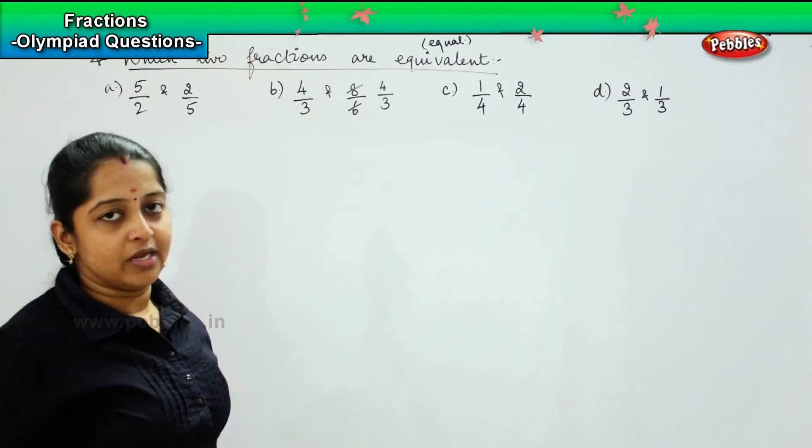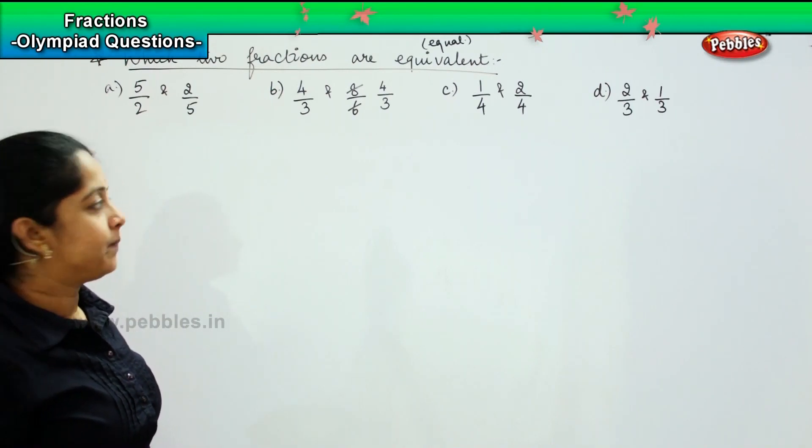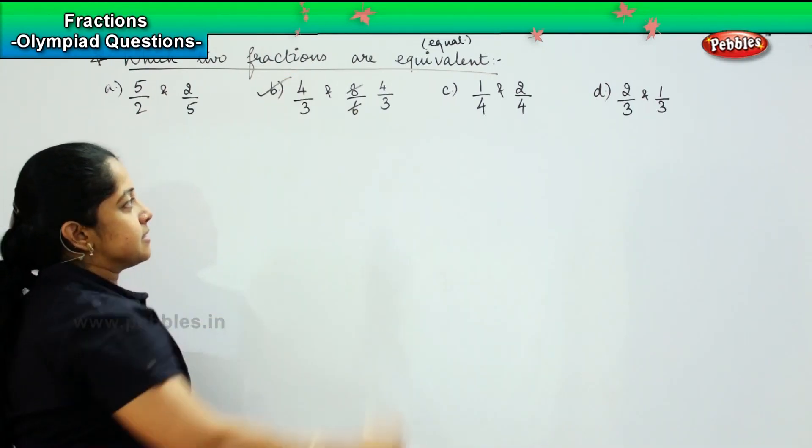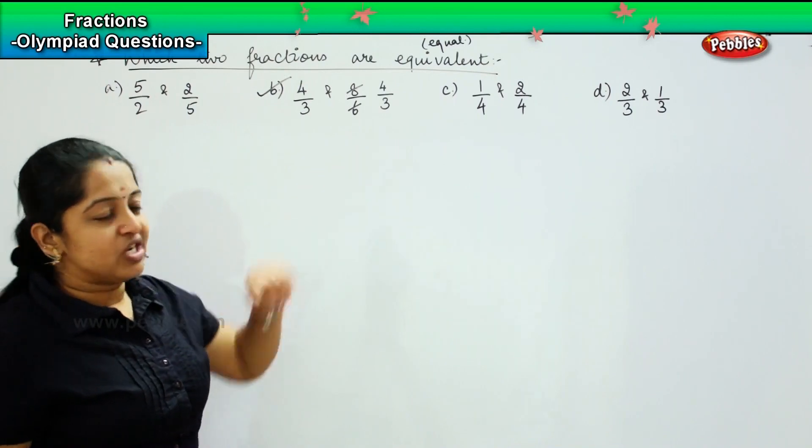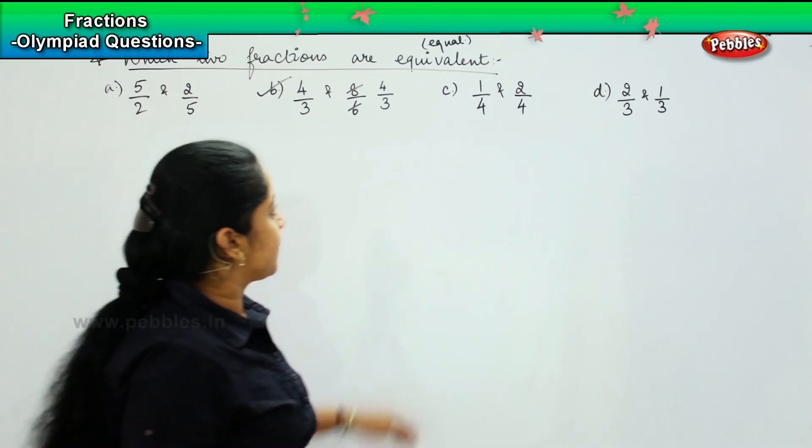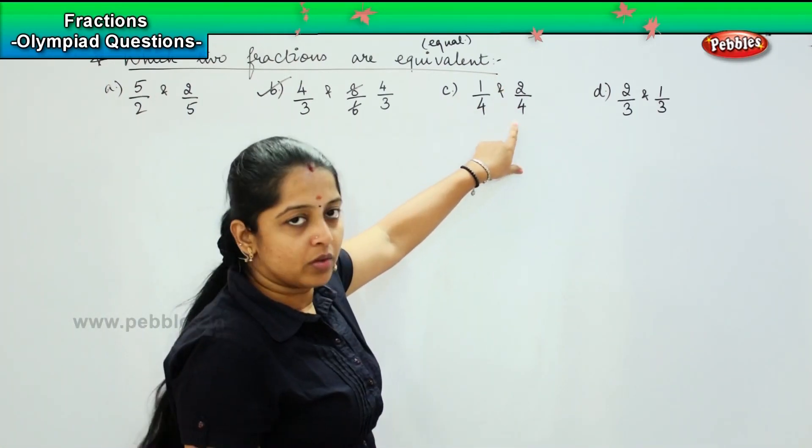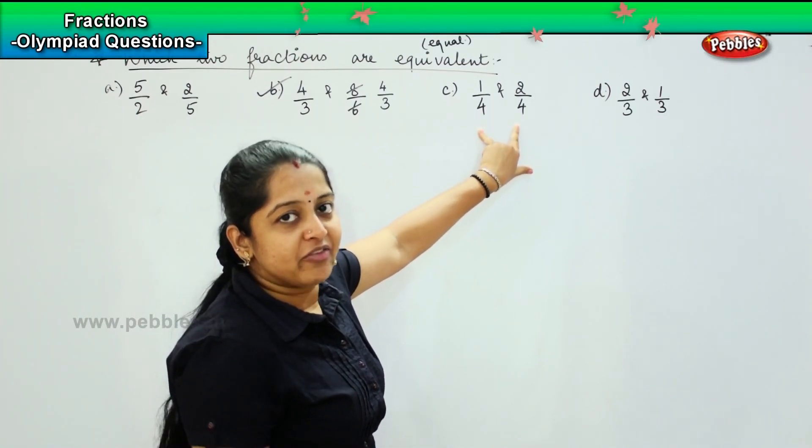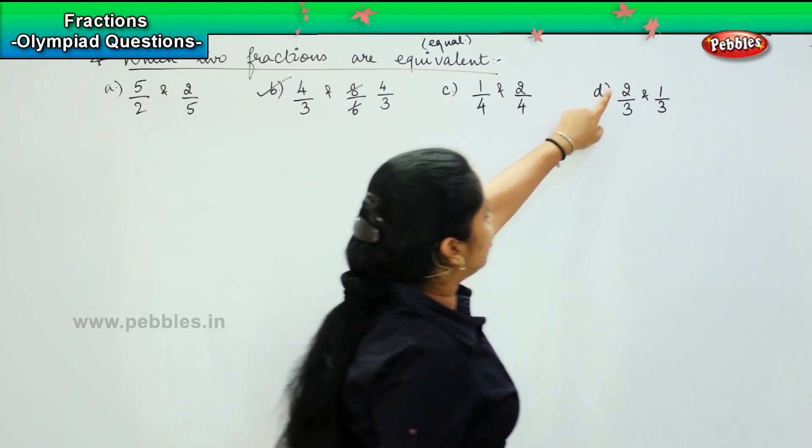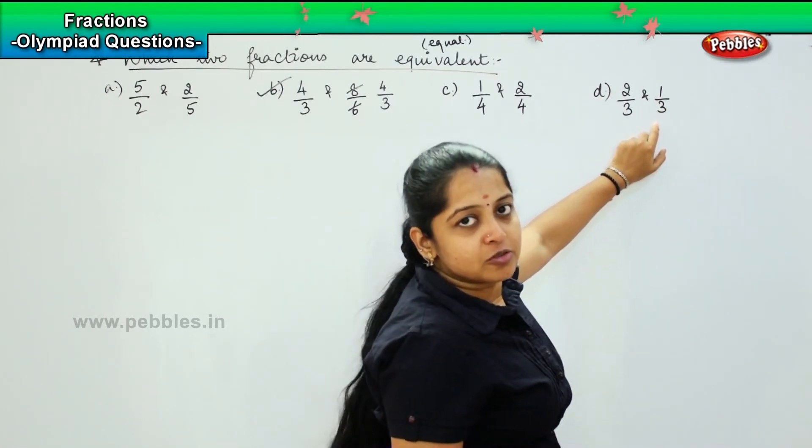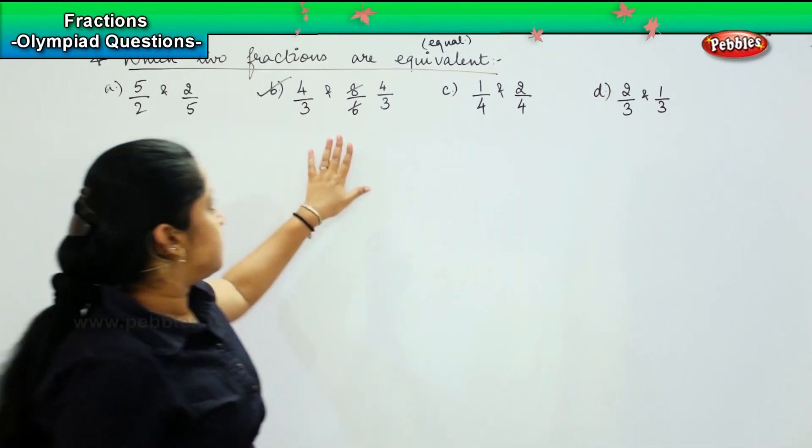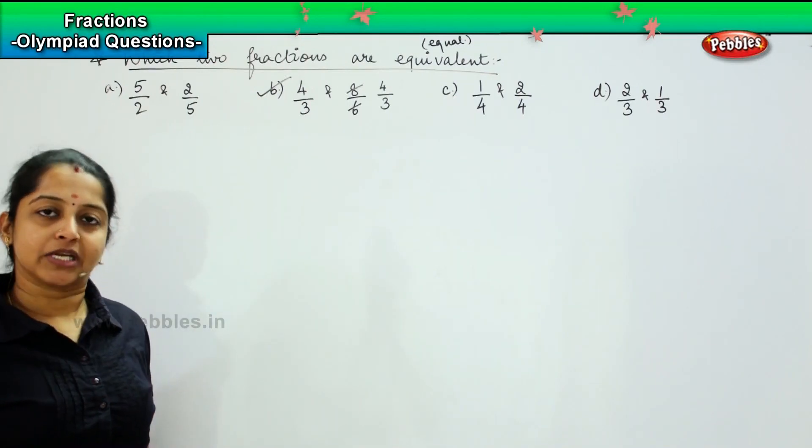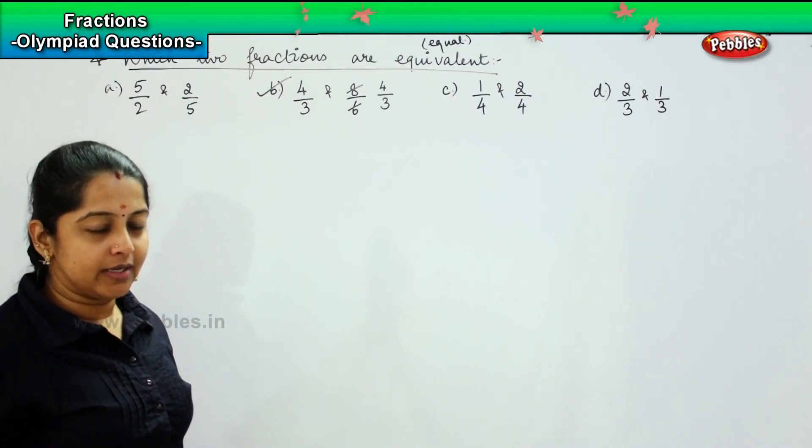So 4/3 and 4/3 make an equivalent pair. Option B is the right one. Shall we check if any other matches? 1/4 and 2/4? No, both are in simplified form. 2/3 and 1/2? That is also not possible. So option B is the right one.